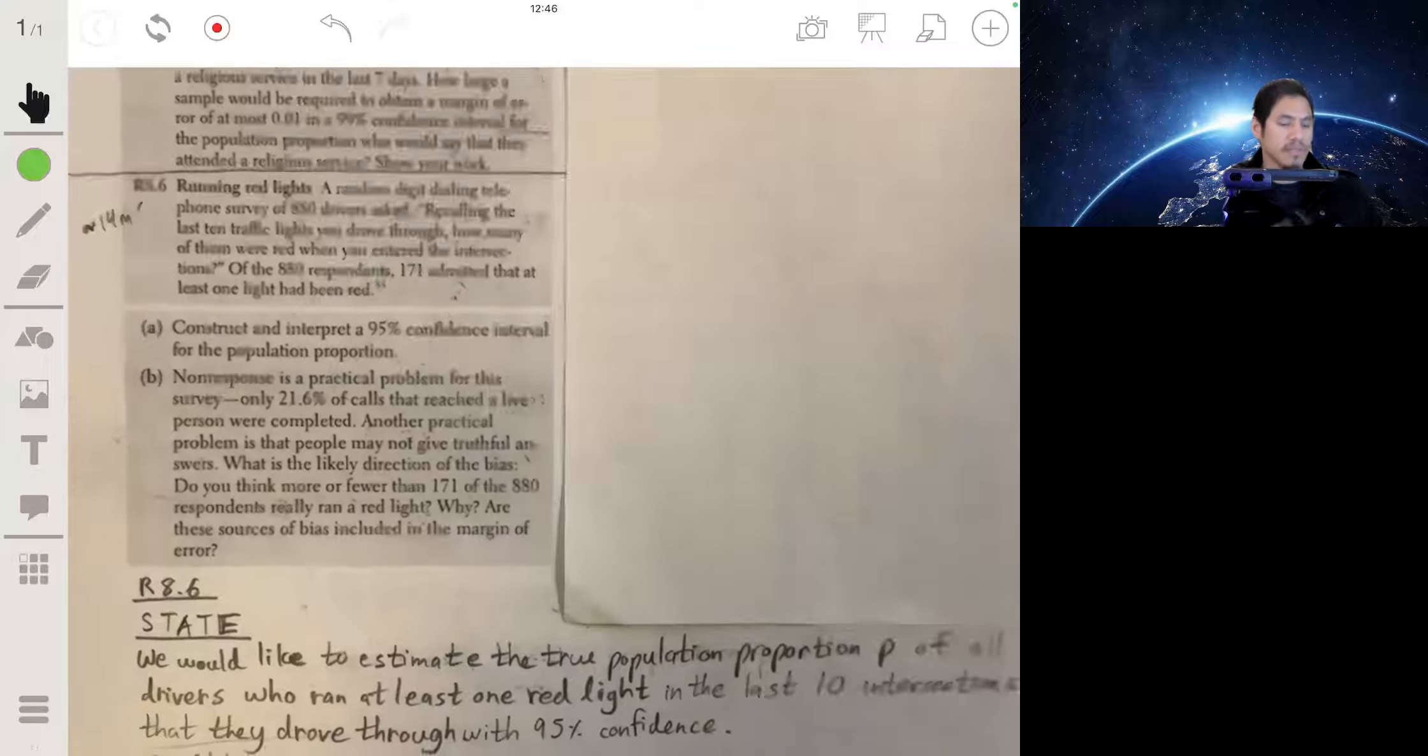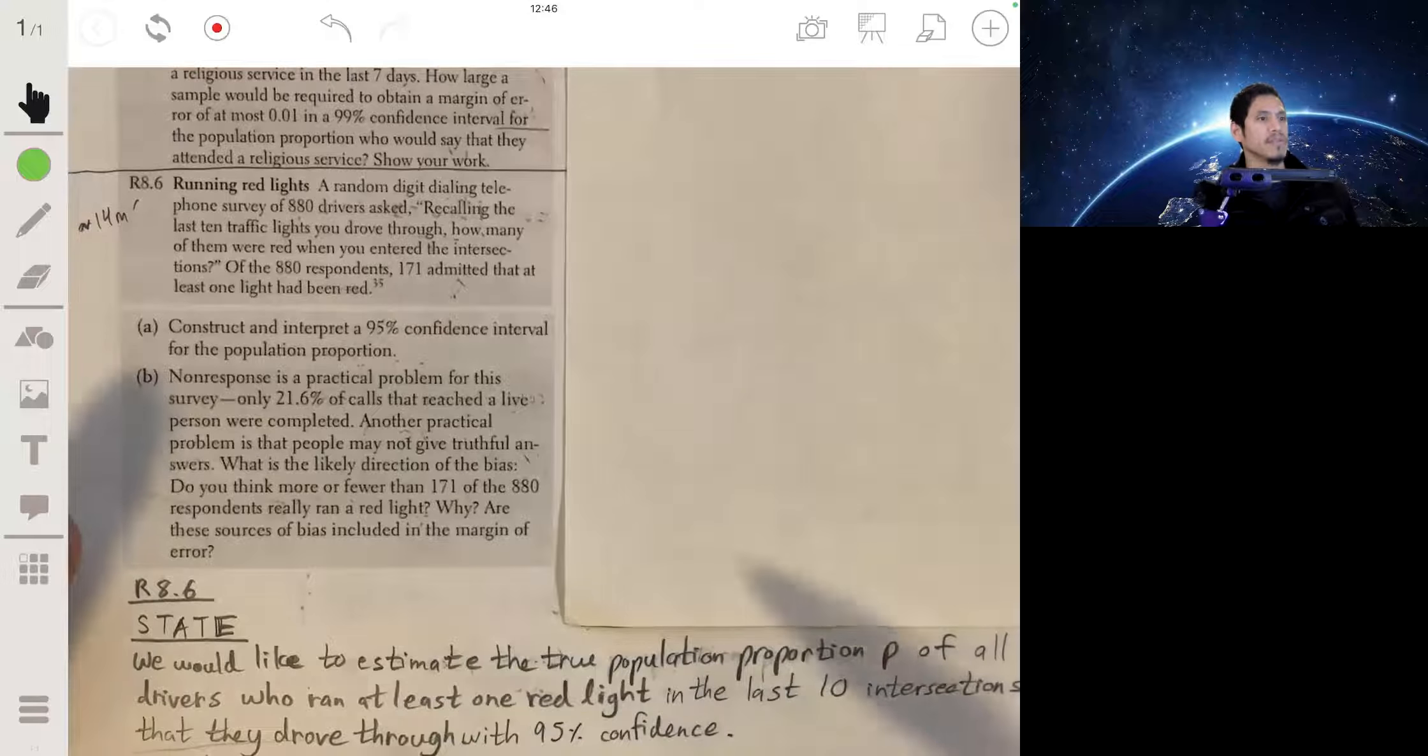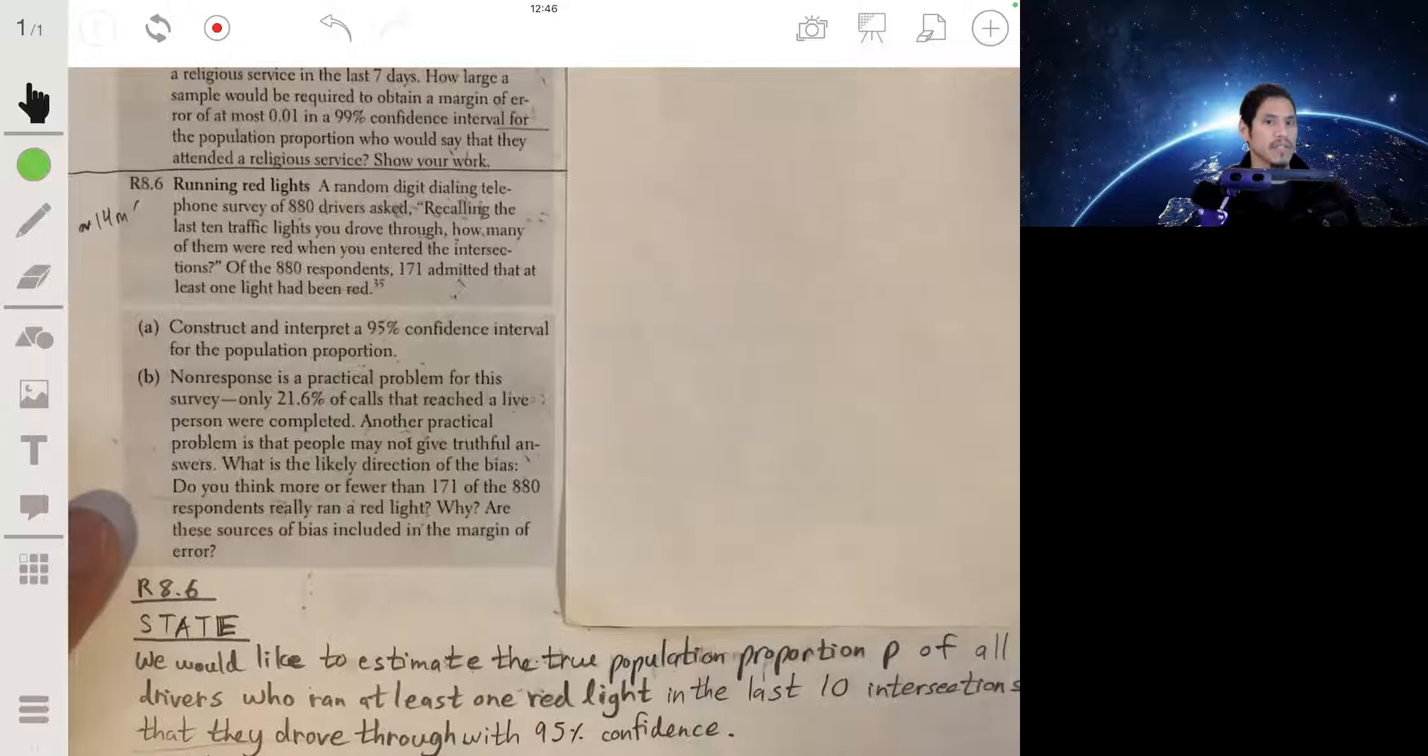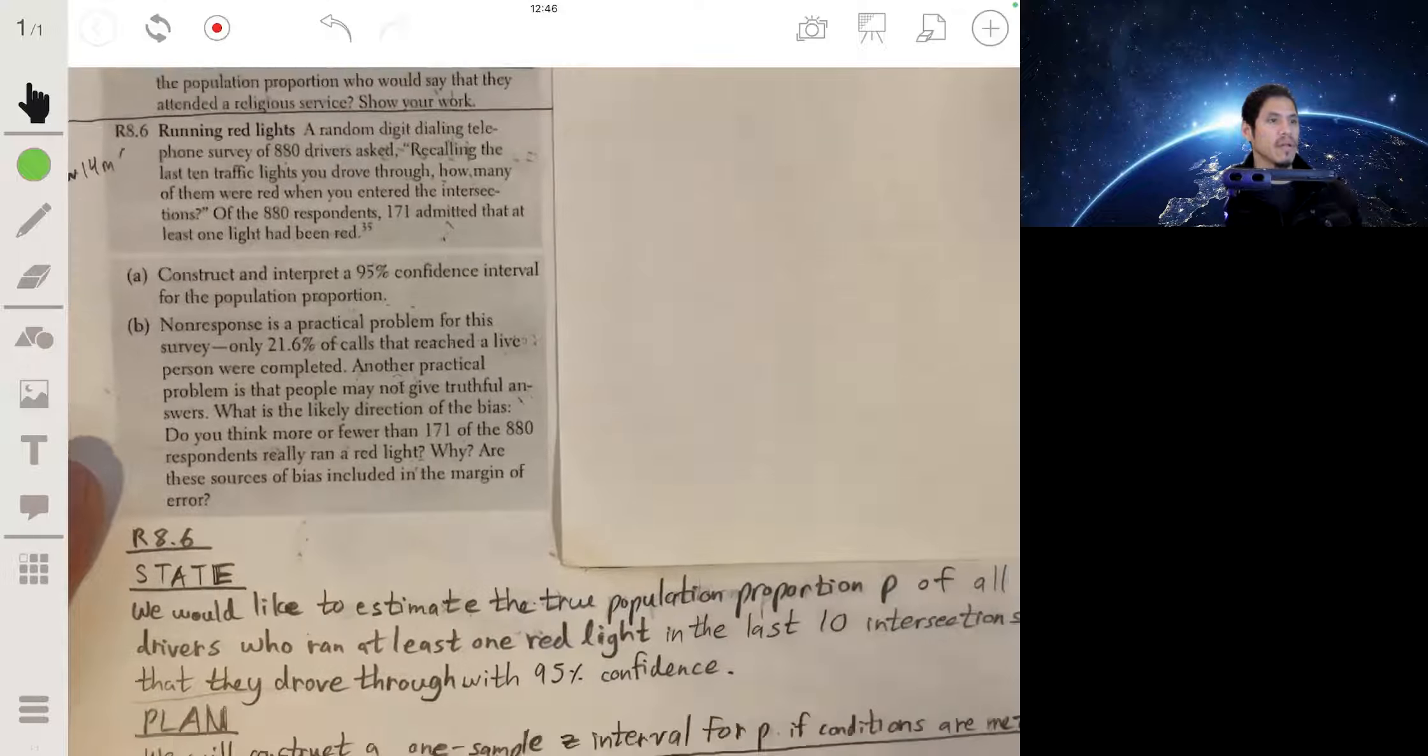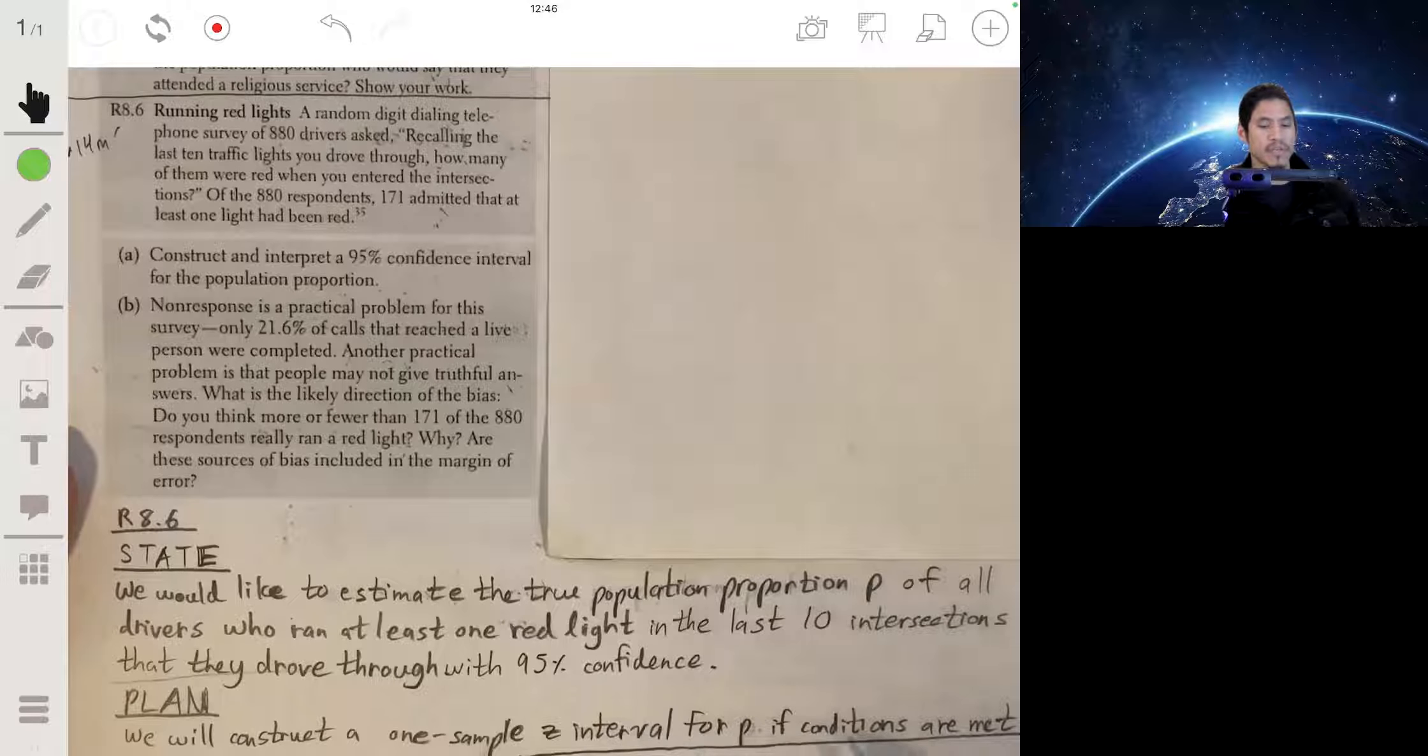Next part, we write down our plan and our plan is we're going to use a one-sample z interval to estimate p as long as the conditions are met.